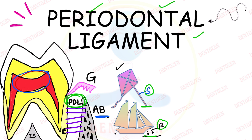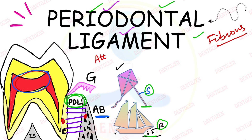Perio means around, dental means tooth, ligament means attachment. So it is something which surrounds the tooth and attaches it to the bone. It is made up of fibers, so it is a fibrous tissue. One end of these fibers is embedded in the cementum and the other end is in the alveolar bone. The main function of the periodontal ligament is the attachment of the tooth to the bone.